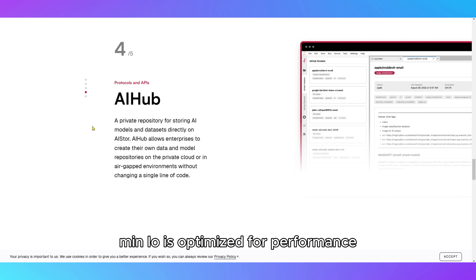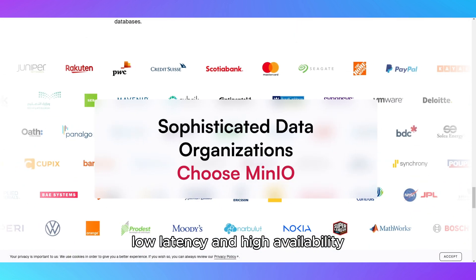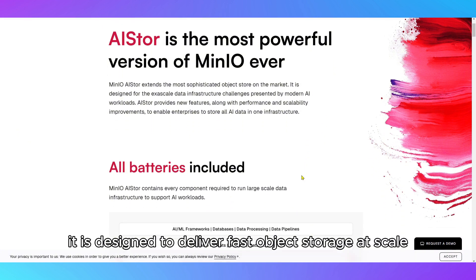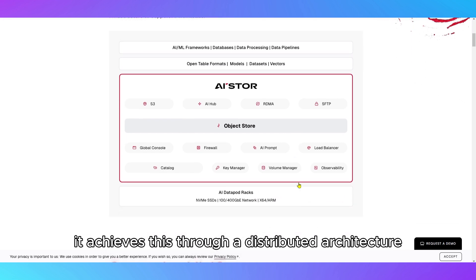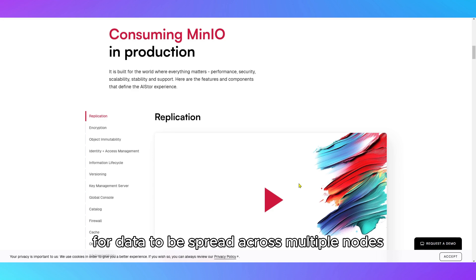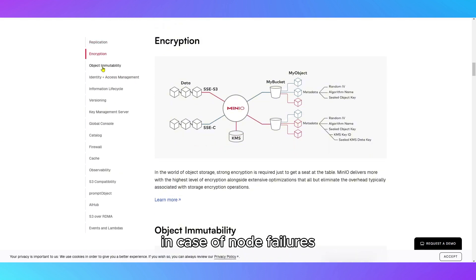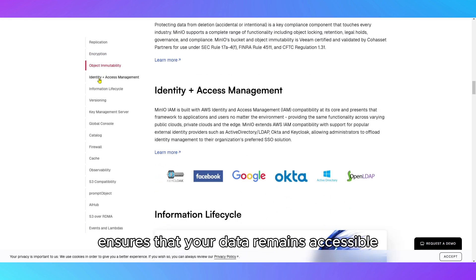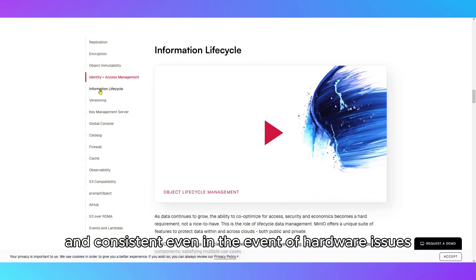Minio is optimized for performance, with a focus on high throughput, low latency, and high availability — designed to deliver fast object storage at scale. It achieves this through a distributed architecture that allows data to be spread across multiple nodes, ensuring redundancy and minimizing downtime in case of node failures. This self-healing nature ensures that your data remains accessible and consistent, even in the event of hardware issues.